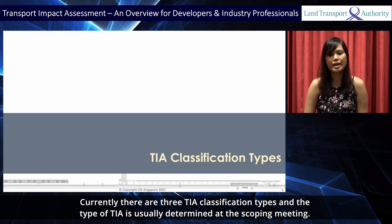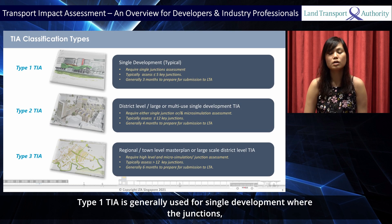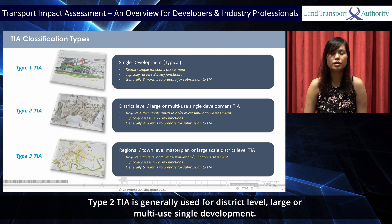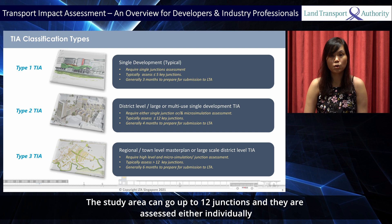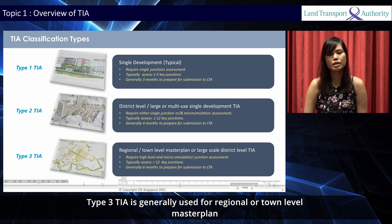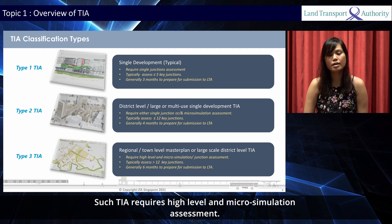Currently, there are 3 TIA classification types and the type of TIA is usually determined at the scoping meeting. Type 1 TIA is generally used for single development where the junctions, usually up to 5 junctions, are assessed individually. Type 2 TIA is generally used for district level, large or multi-use single development. The study area can go up to 12 junctions and they are assessed either individually or together with micro-simulation. Type 3 TIA is generally used for regional or town level master plan and the study area usually goes beyond 12 junctions. Such TIA require high level and micro-simulation assessment.